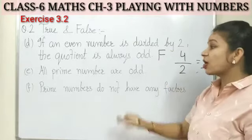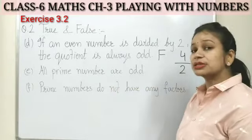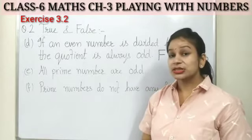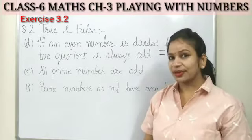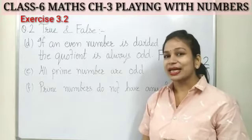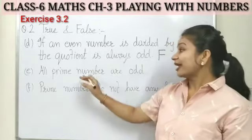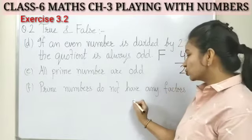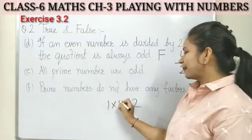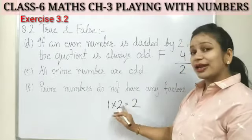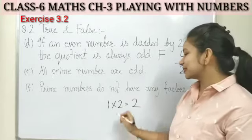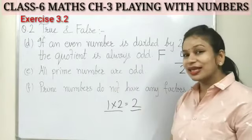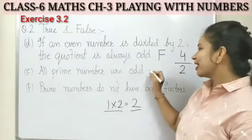Statement E: all prime numbers are odd. Prime numbers are numbers that have only two factors — one and the number itself. But prime numbers start from number two, which has two factors: one times two equals two. Two is a prime number and it is an even number. So saying all prime numbers are odd is wrong — this is a false statement.